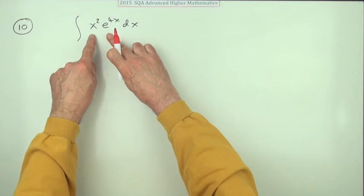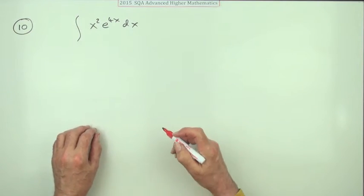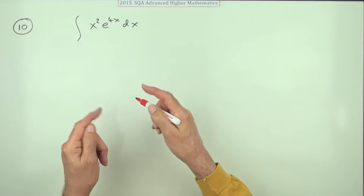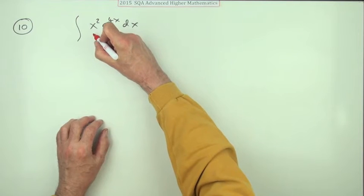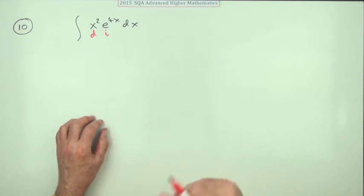So the main thing with integration by parts is deciding which one will you differentiate, which one will you integrate. You'll differentiate the one which will eventually disappear, so differentiate the first term and integrate the second part of that product.